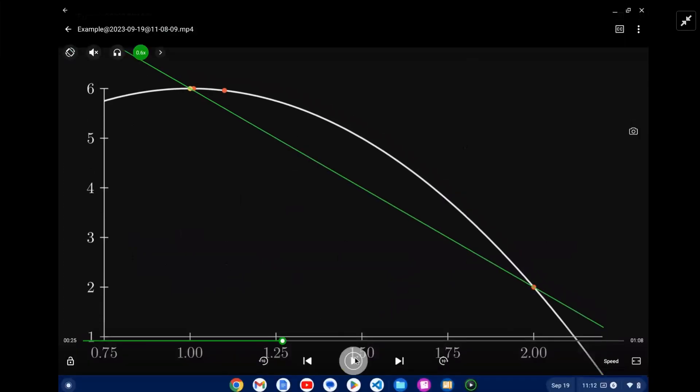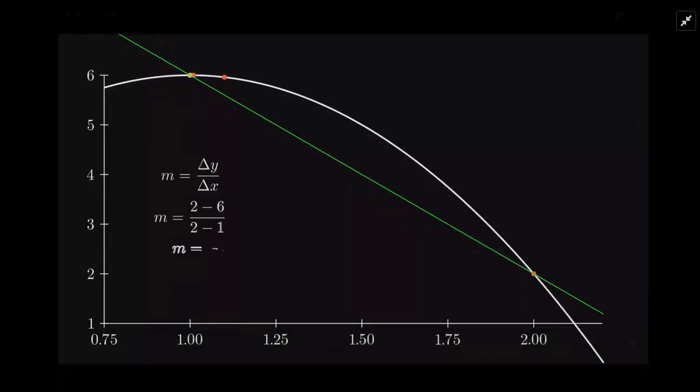Now here is our first secant. It's from this point x equals one to x equals two. We're going to draw that straight line and calculate the slope. The slope is the change in y over change in x. The y value comes from the function, the x value is given. You calculate the numerator from the function and the denominator is just the change in x. There's the gradient or slope of the first one: negative four.